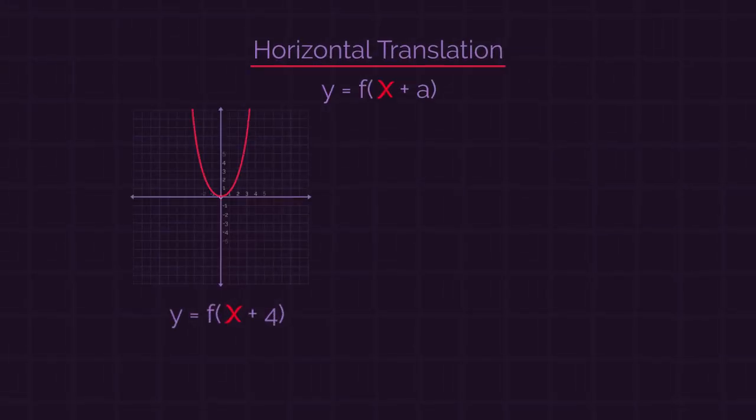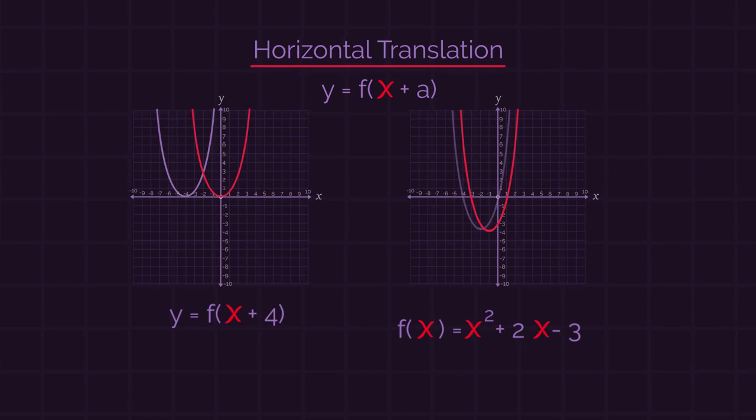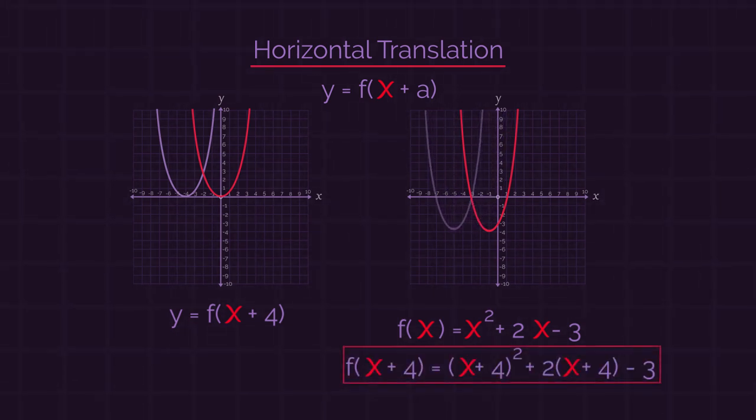For horizontal translations, we add the number just to the x. So the plus four just goes to the x. If we had a function with this equation, to shift the curve to the left, we would add four to every x in the equation.